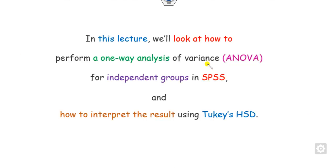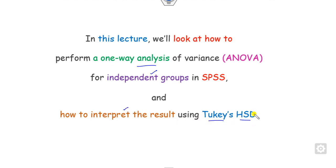What we will look at in this lecture: we will see how we can perform one-way ANOVA for independent groups in SPSS, and also how we can interpret the results using the Tukey hypothesis testing.